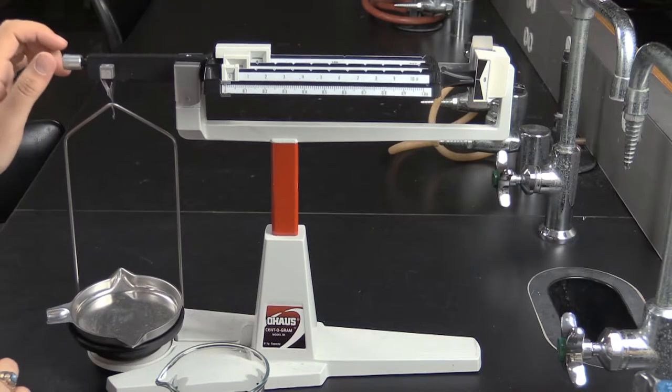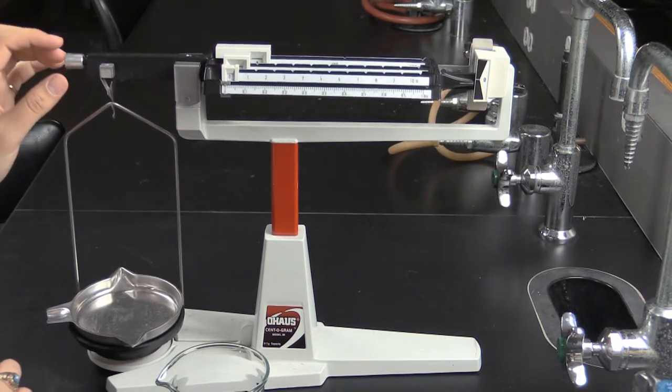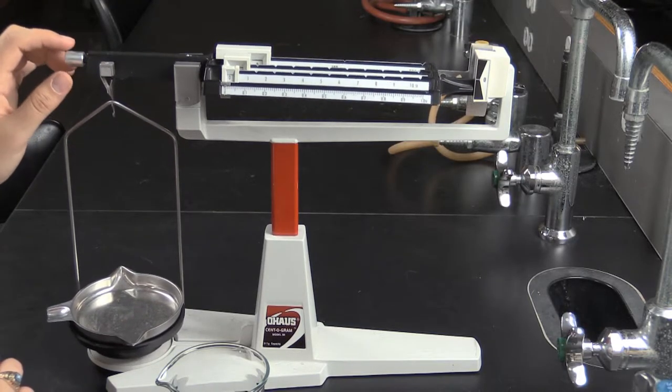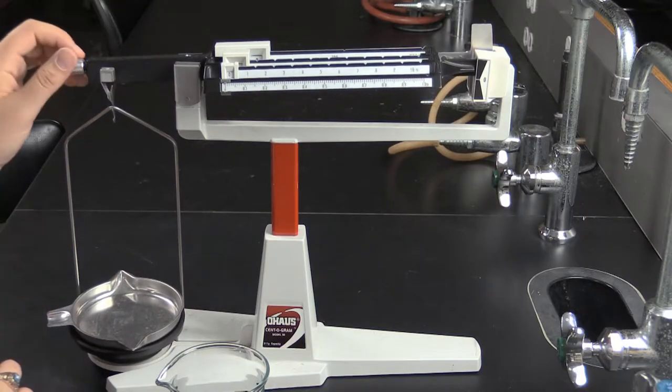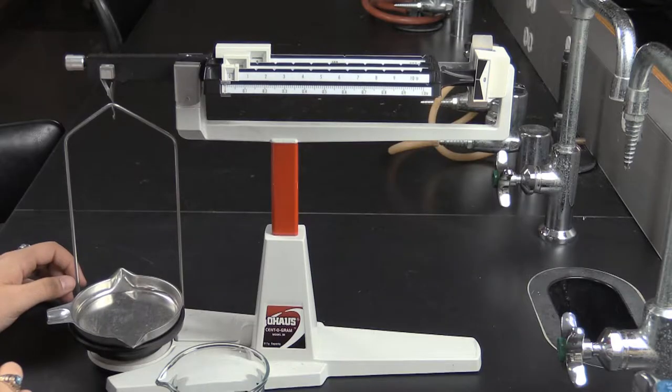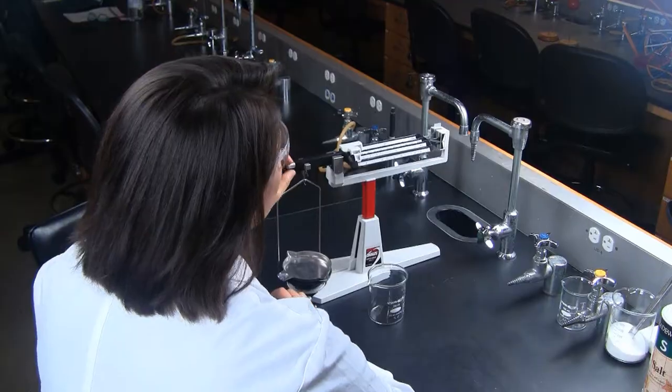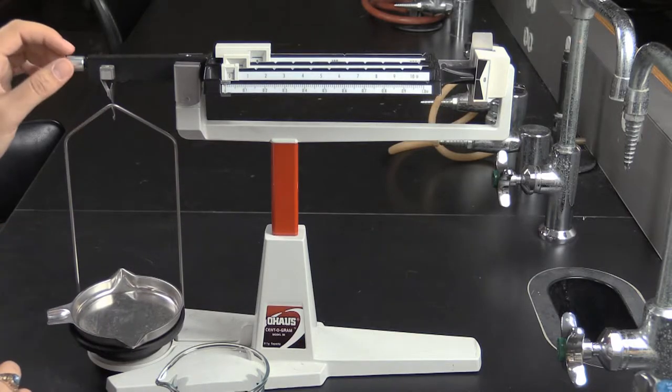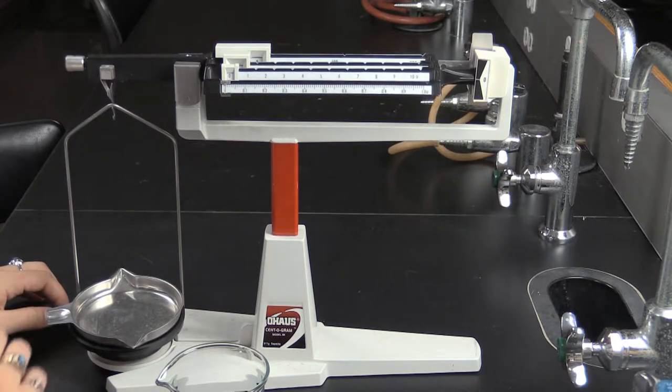This will take a bit of back and forth until you get it just right. To adjust the beam side up, loosen the nut, turn counter-clockwise. Righty tighty, lefty loosey. To adjust down, turn it in the opposite direction.